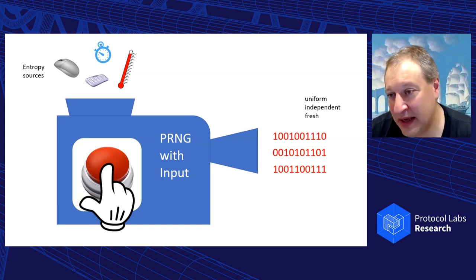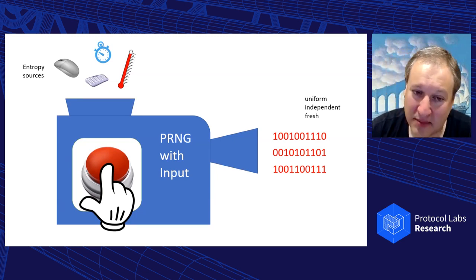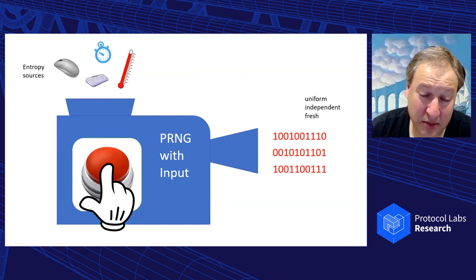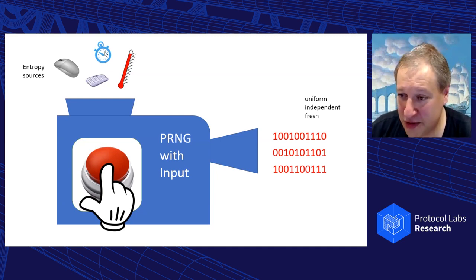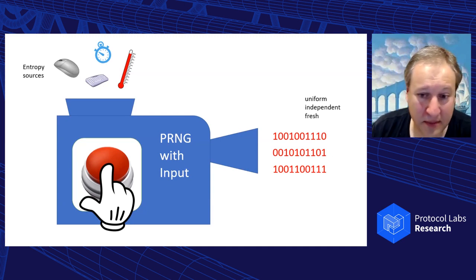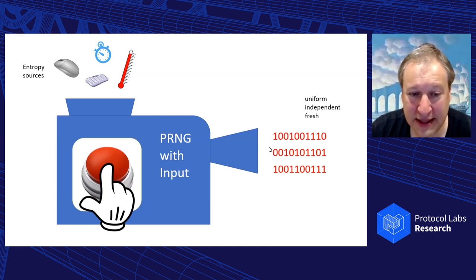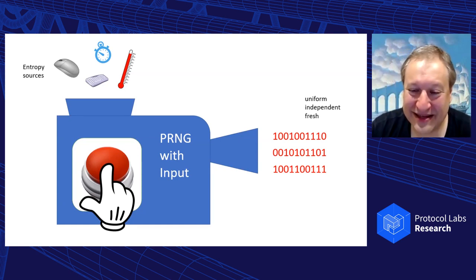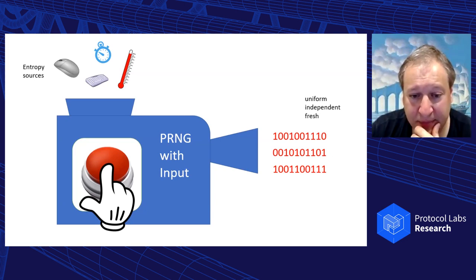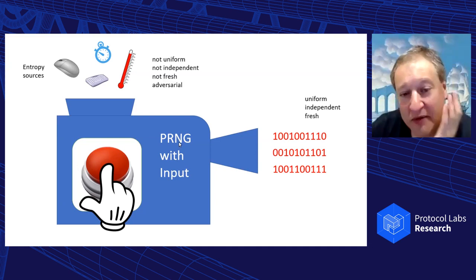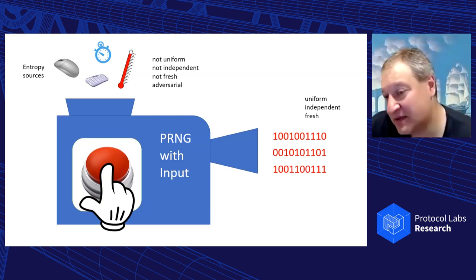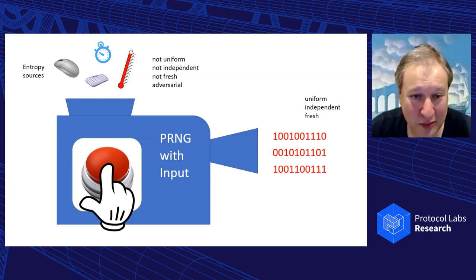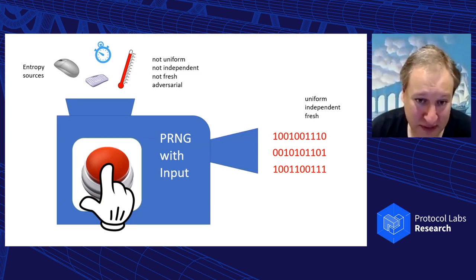The most common entropy source is timing of interrupts. There are millions of interrupts on a computer, all with timestamps, and it's believed that they have a lot of uncertainty to the attacker — it's completely infeasible to predict all those clock cycles. However, even though they have entropy, they're not uniform, not independent, not fresh, and sometimes even adversarial. The attacker might pretend to type on a keyboard, run an intensive process to hit the processor, or even cause some interrupts.